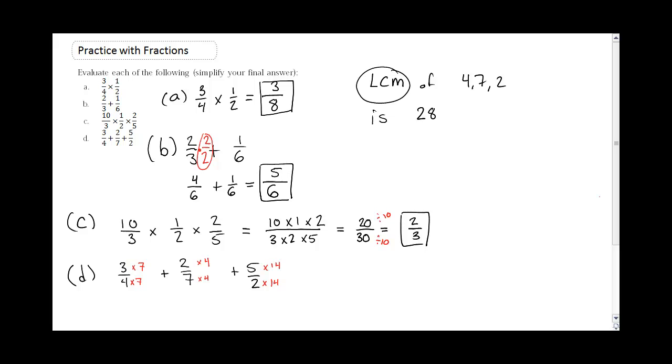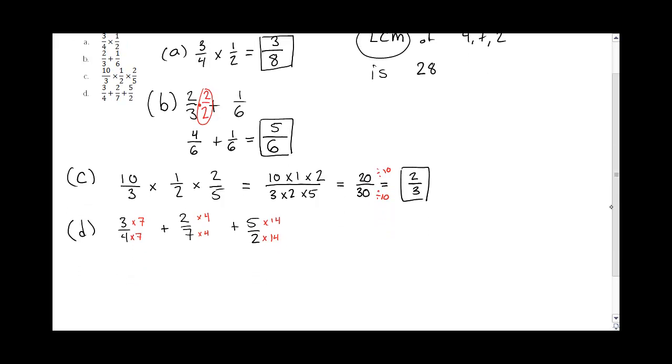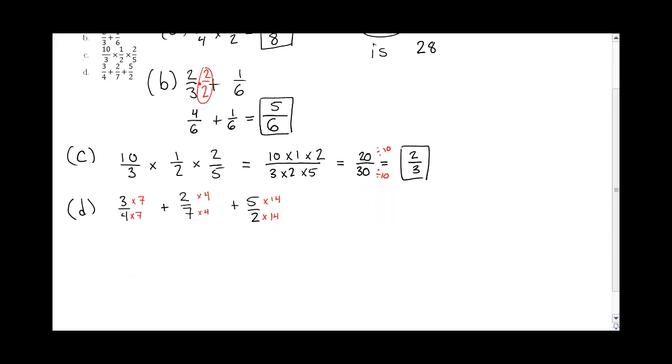So now, this changed my problem to, 3 times 7 is 21 over 28. 2 times 4 is 8, 2 times 4 is 8 over 28.